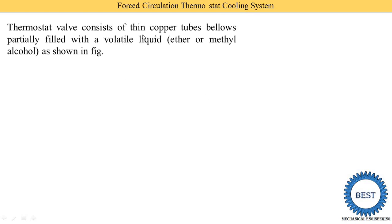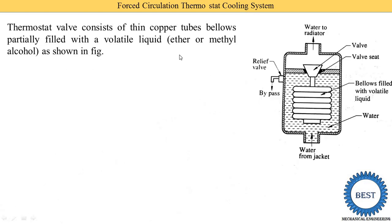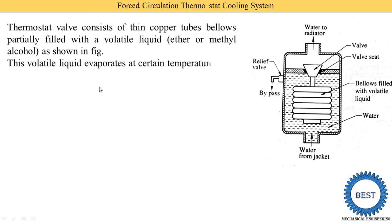The thermostat valve consists of a thin copper tube bellows filled with a volatile liquid — either ether or methyl alcohol. Water from the jacket enters one side, and the bellows is connected to a valve on the other end. The outer body has a valve seat. When the valve opens, water is supplied to the radiator. A relief valve — also called a bypass valve — is also provided.